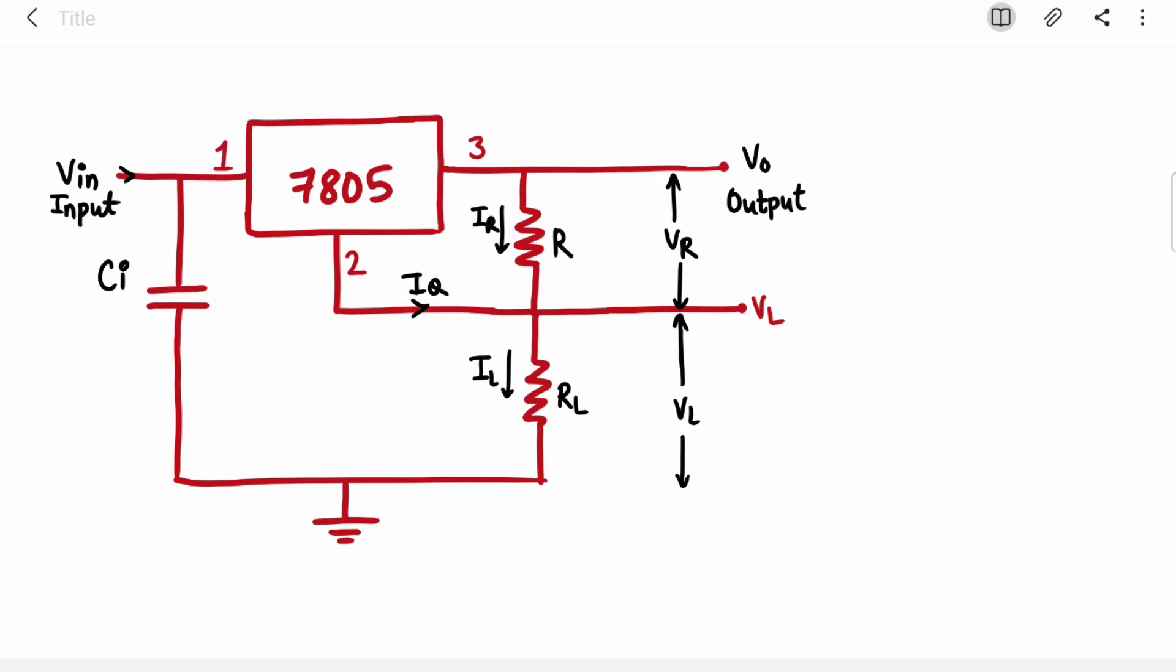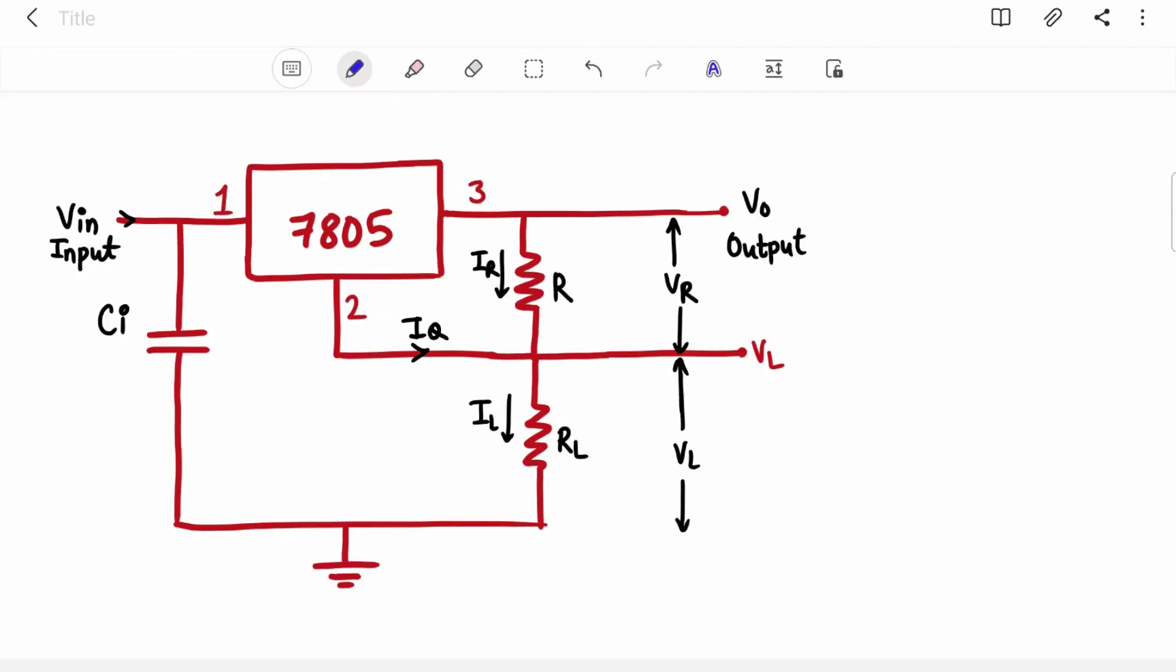So this is the circuit diagram. For example, this is your 7805 IC. At pin number 1 there is your input, at pin number 3 there is your output. Pin 2 is ground, but here we have connected our resistor between pin 2 and 3, and your load resistor RL is connected between pin 2 and ground. Then there is one input capacitor which is connected between pin 1 and ground. It is a very simple circuit.